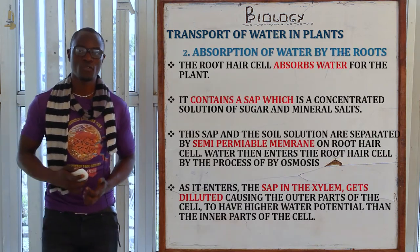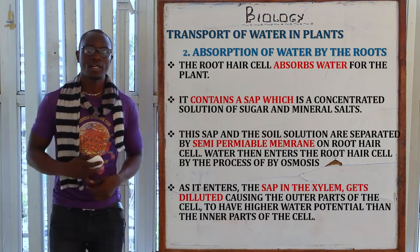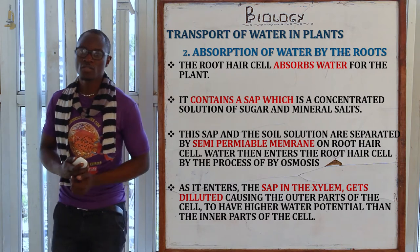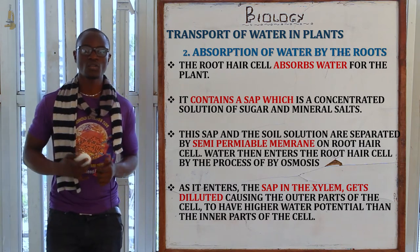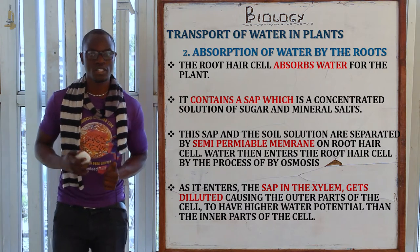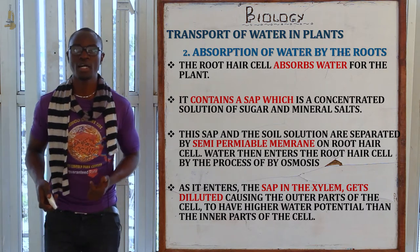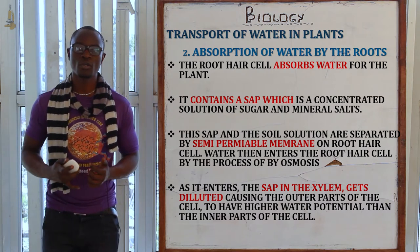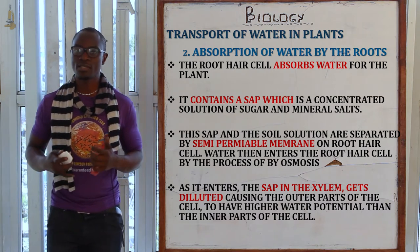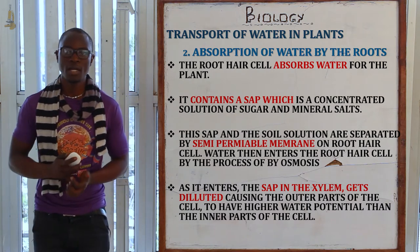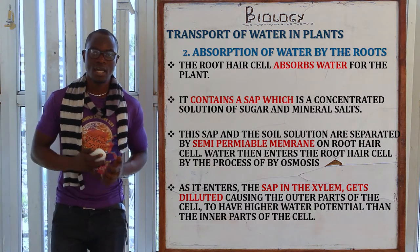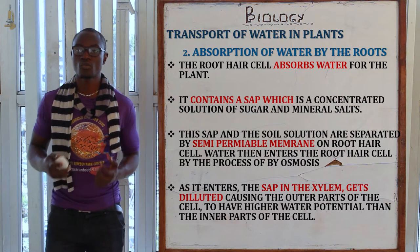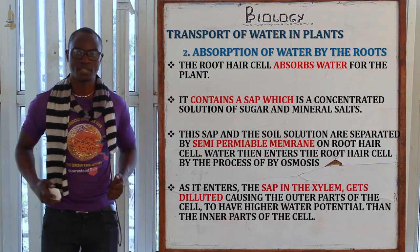The second one is absorption of water by the root, whereby the water is absorbed in the plant mainly by the root hair cell. The root hair cells contain a sap which is a concentrated solution of sugar and mineral ions. The sap and the soil solution are both separated by a semi-permeable membrane, which means it is osmosis that is going to take place.